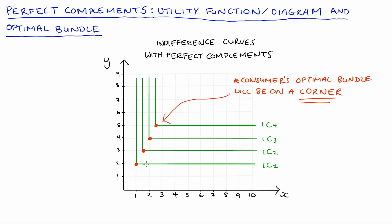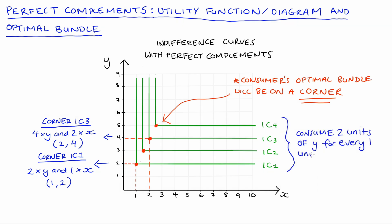Moreover, the corner points will be able to tell us about the proportions that our consumer prefers. So if we look at the corner of IC1 for instance, at that point our consumer consumes 2y and 1x, so that's point (1, 2). If we look at the corner of IC3 that corresponds to where our consumer consumes 2x and 4y, so (2, 4). And hopefully you can see then by looking at those corners that our consumer really prefers to consume two units of y for every one unit of x. That's the ratio that describes the corner points on these indifference curves here.